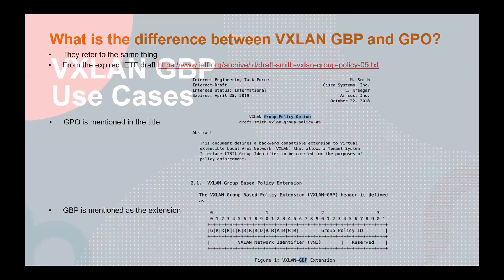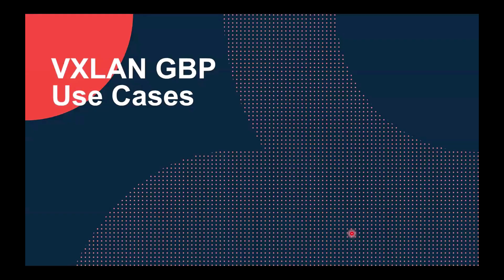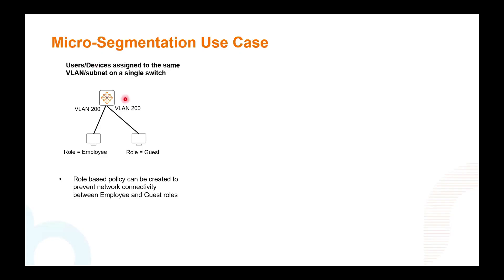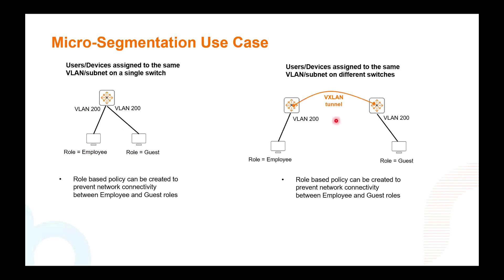The main use case is micro segmentation, meaning you can block or allow traffic between devices on the same subnet and same VLAN. You can assign them role names and block or allow traffic. Or if they are on different switches connected with a VXLAN tunnel, you can apply that policy for the same subnet and same VLAN for different roles.